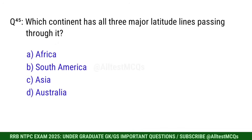Q45. Which continent has all three major latitude lines passing through it? Correct option is C. Africa.